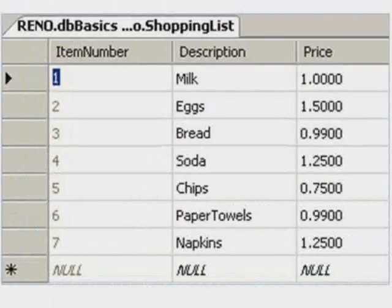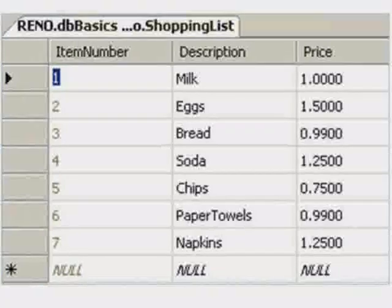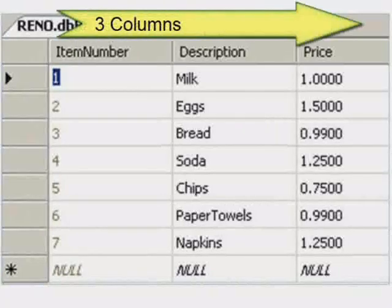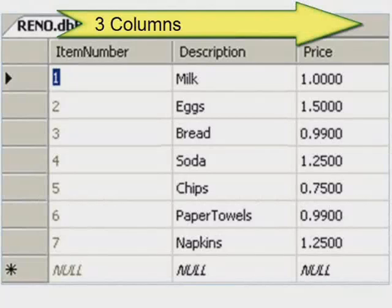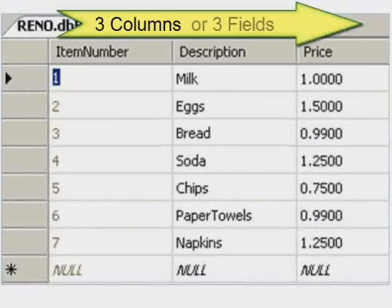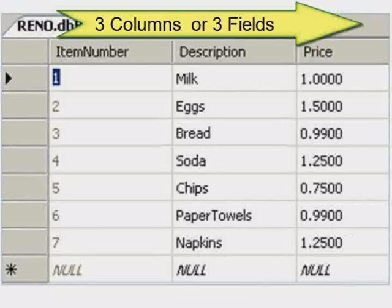Just how many columns do we have? It looks like we have three. The correct word for column in GeekSpeak actually gives you two choices: you can choose between the word column or field. You can say we see three columns, or you can say that we see three fields.